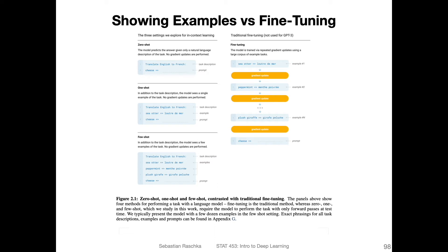They don't use any fine-tuning, similar to GPT version two. In GPT version one they used fine-tuning after pre-training; in GPT version two they got rid of it, and in GPT version three they also don't use any fine-tuning. However, whereas GPT version two only used zero-shot transfer to provide context, GPT-3 additionally has one-shot and few-shot contexts where they provide at least some examples of the task to the model.